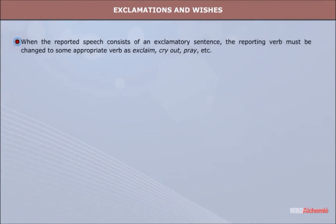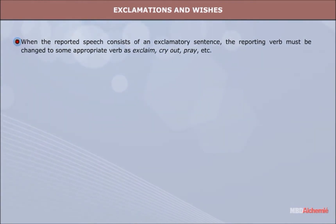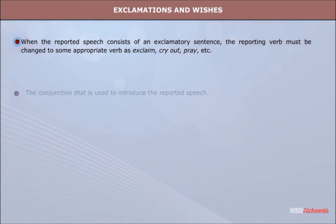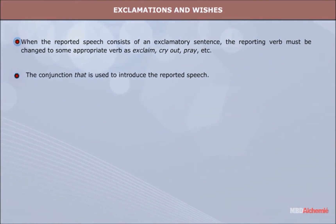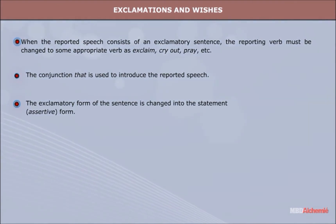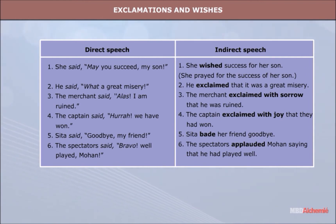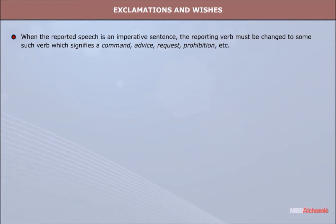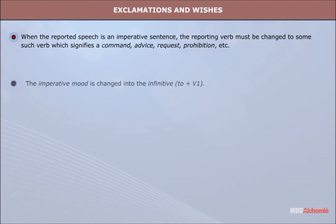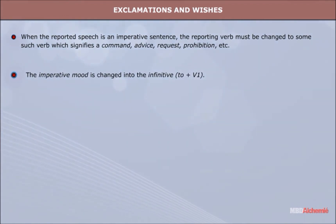Exclamations and wishes: When the reported speech consists of an exclamatory sentence, the reporting verb must be changed to some appropriate verb such as 'exclaim,' 'cry out,' 'pray,' etc. The conjunction 'that' is used to introduce the reported speech. The exclamatory form of the sentence is changed into the statement or assertive form. When the reported speech is an imperative sentence, the reporting verb must be changed to some such verb which signifies a command, advice, request, prohibition, etc. The imperative mood is changed into the infinitive (to + V1).